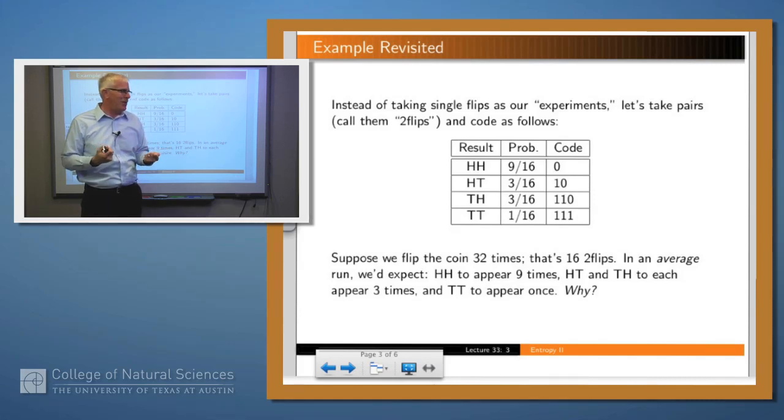Similarly, HT is 3/16ths so you'll get three of them on average. Of course, every time you flip this coin for a sequence of 32 times, you're not going to get exactly these proportions. But in the long run, you'll get on average these proportions. So that means you'll get on average nine HH, three HTs, three TH, and one TT out of 16 of these two-flip experiments.